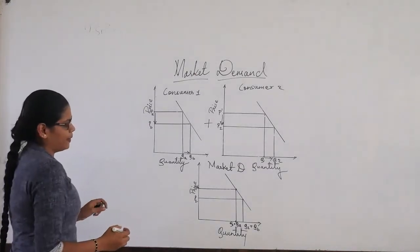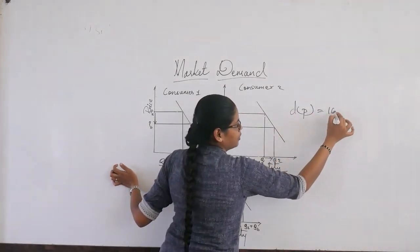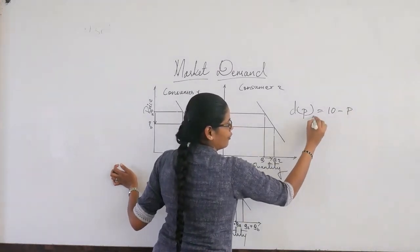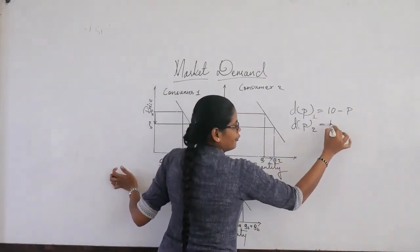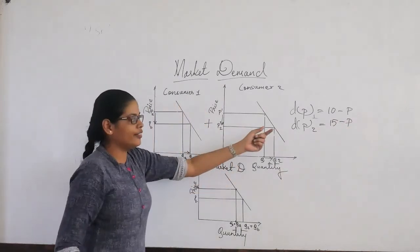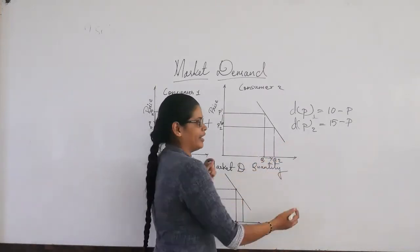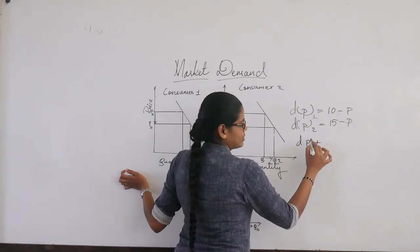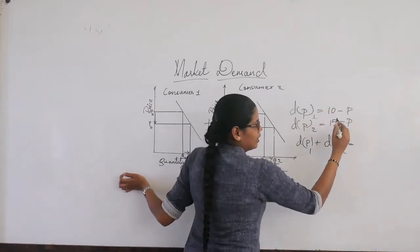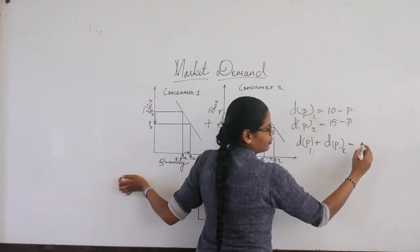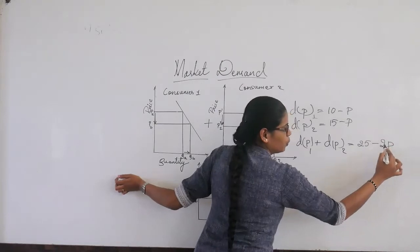For example, if the demand of consumer one is D = 10 minus P, and the demand of consumer two is 15 minus P, then the demand for each consumer is different. When we derive the market demand curve, it becomes D1 plus D2, which equals 10 plus 15 minus 2P, giving us 25 minus 2P.